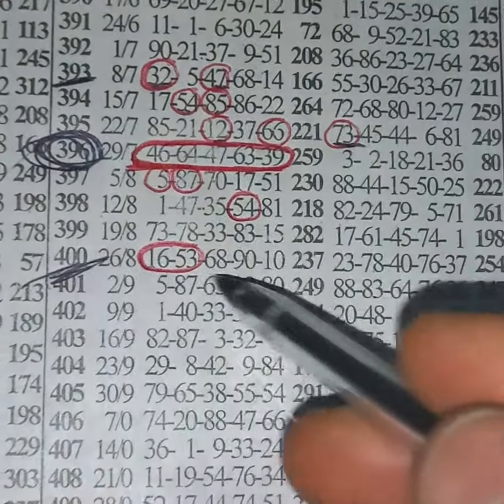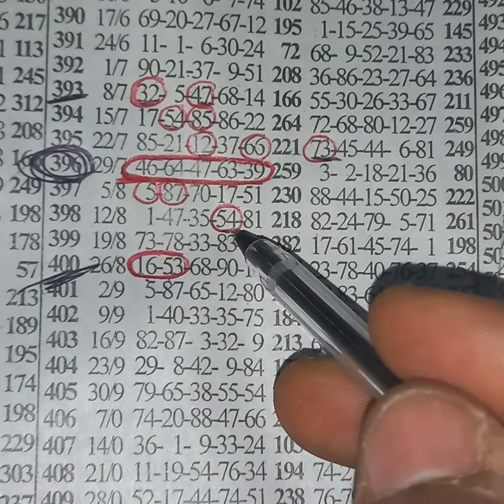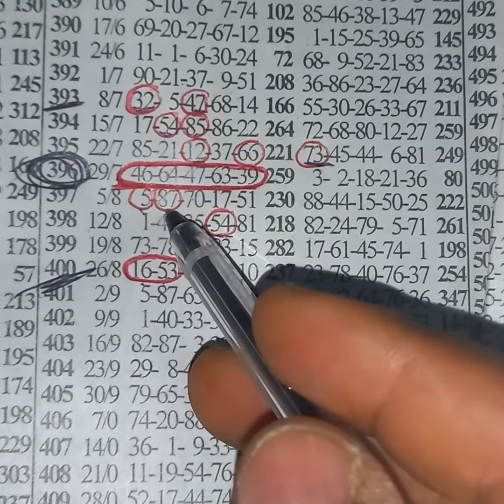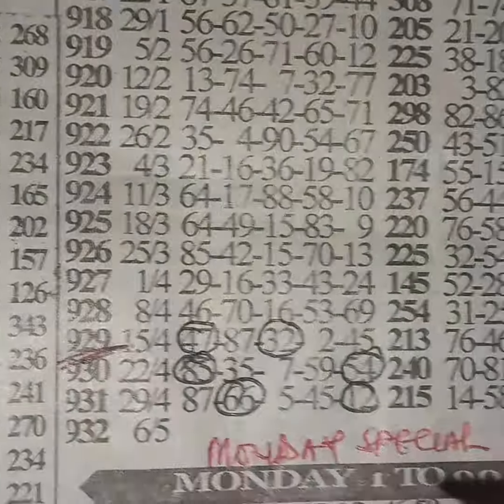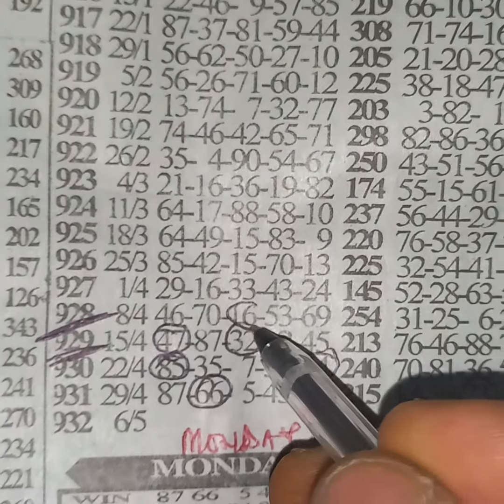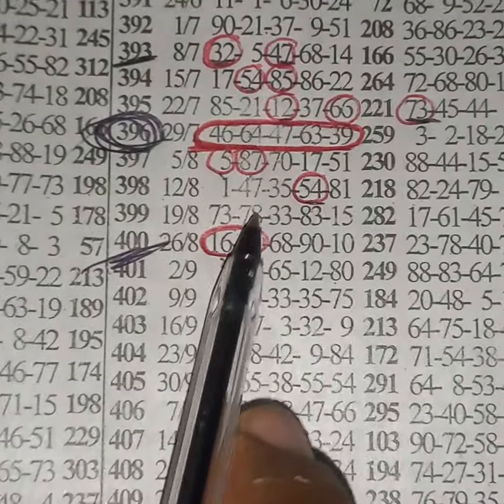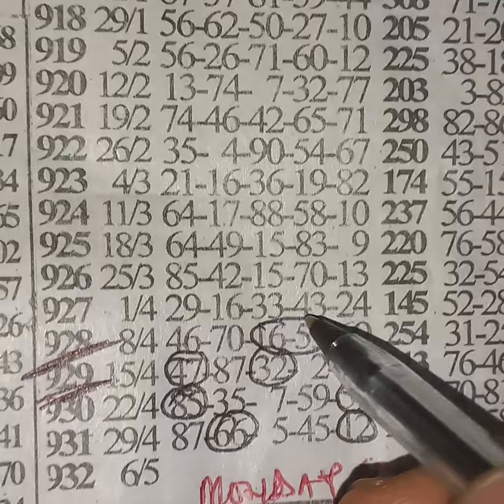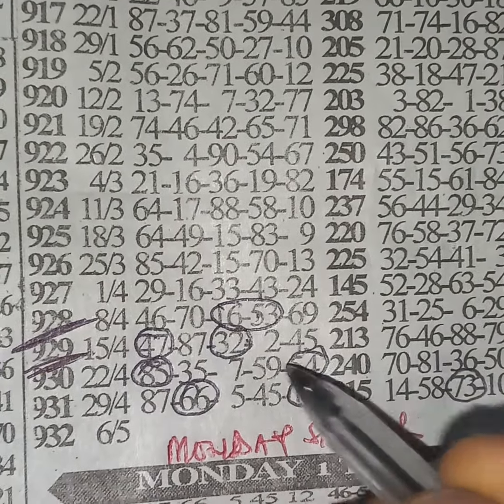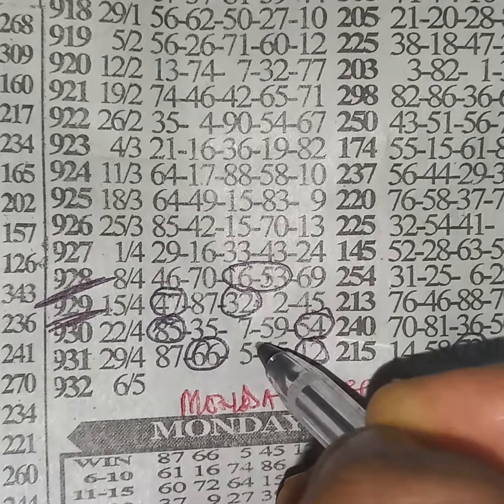16-53 plate one two three 54 plate, following week single 587 plate. So we come to event number 928: 16-53 plate, close that's split over there, that's split close here, one two three 54 plate, following week single five, eighty seven...